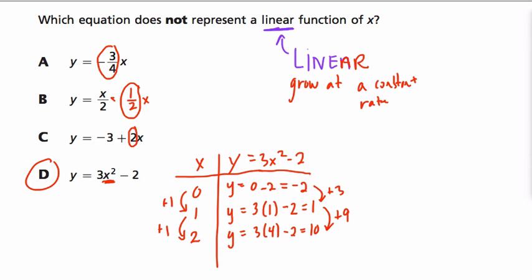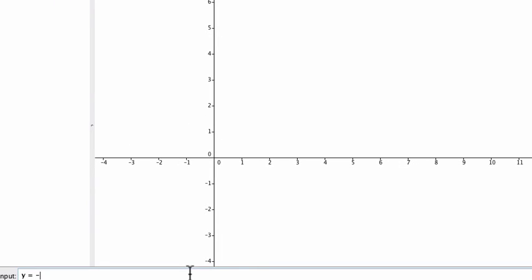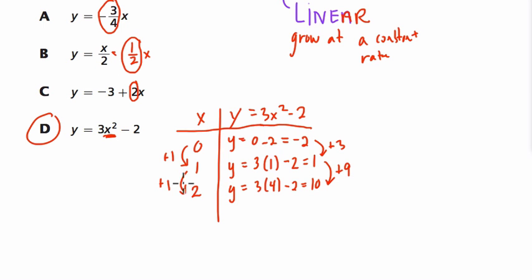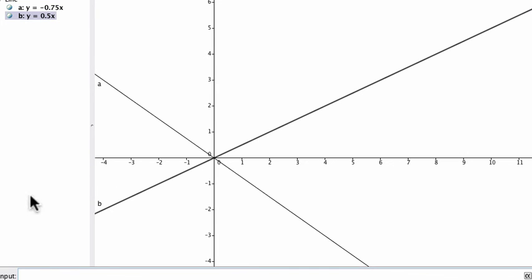And if we're not convinced, we can graph these things. Let's just take a look. So first of all, this is GeoGebra, an awesome program. What if we have y equals negative 3/4 x? What does that look like? Well, you can see if we graph it, it does form a line. What if we have y equals x divided by 2, or 1/2 x? Let's see what that looks like. It's also a line, right? And then y equals negative 3 plus 2x. That negative 3 is now going to shift our line down.